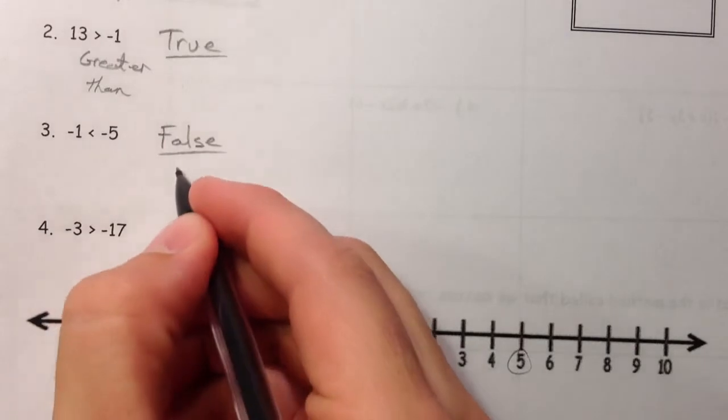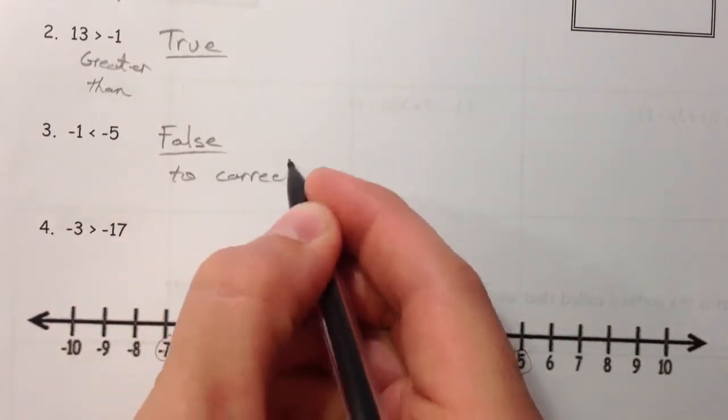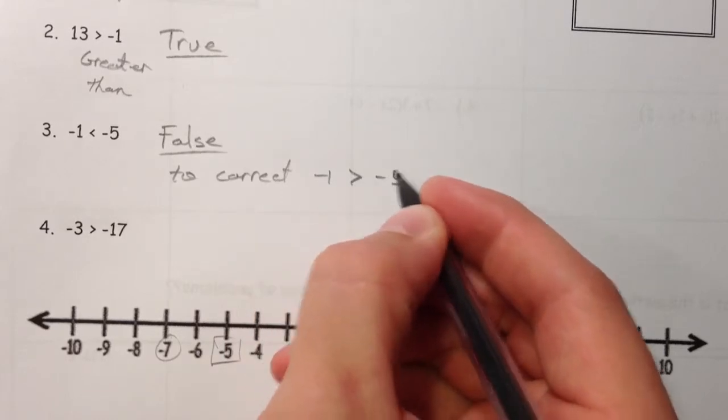If you wanted to correct it, you could write it as the opposite. Negative 1 is greater than negative 5.